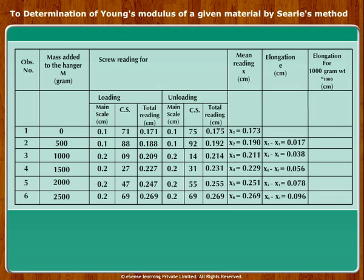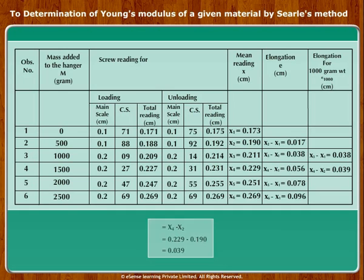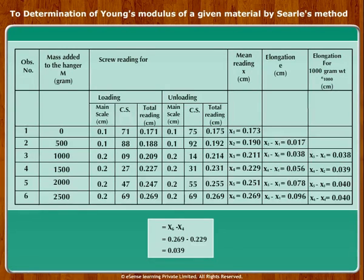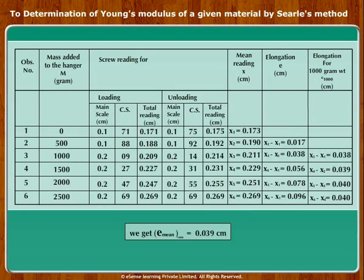Also, find the elongation e due to mass 1000 grams by taking the differences x3 minus x1, x4 minus x2, x5 minus x3, and x6 minus x4. The mean elongation for 1000 grams is found by taking the mean of the above values. We get e equal to 0.039 centimeter. Please note, this mean is required to find Young's modulus by calculation.